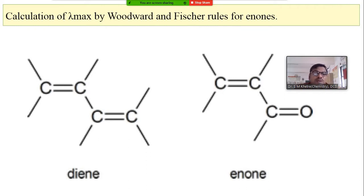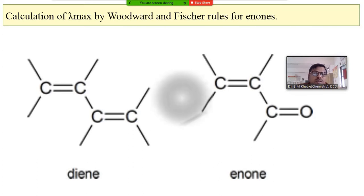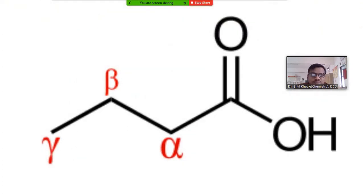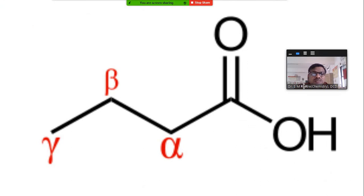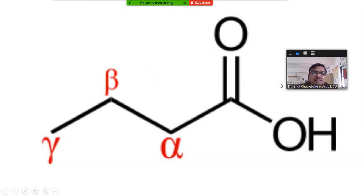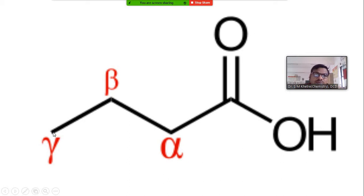Do not forget the meaning of this terminology. When we consider the enone system, we have to observe the alpha, beta, gamma carbon atoms. Look at this example — it is a carboxylic acid. This is the carbonyl group. If you consider the next carbon atom with respect to the carbonyl group, this is called the alpha carbon. The next is called the beta carbon, and the next is called the gamma carbon, and so on.